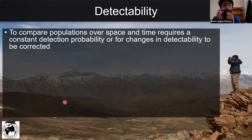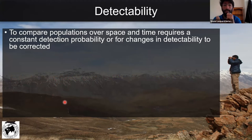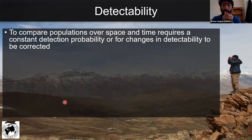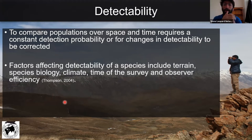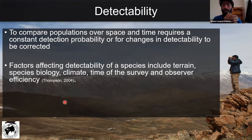Let's talk about detectability very quickly. To compare populations over space and time, we need a constant detection probability, or changes in detectability need to be corrected. If your detection probability changes over time, it's really hard to compare those two populations. Factors that affect detectability of species, especially mountain ungulates, include terrain — if you have very rugged terrain, you're likely to miss ungulates, especially species like Markhor or Ibex that are really cliff-loving. Species biology ties back into terrain as well.